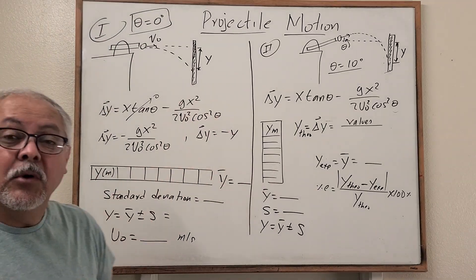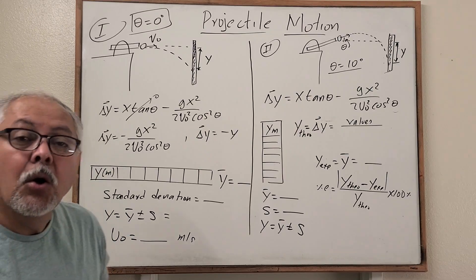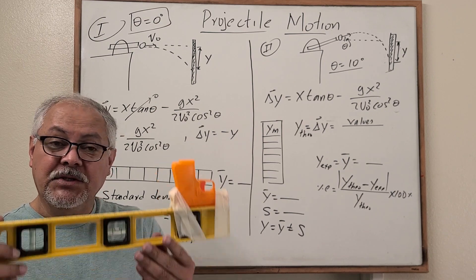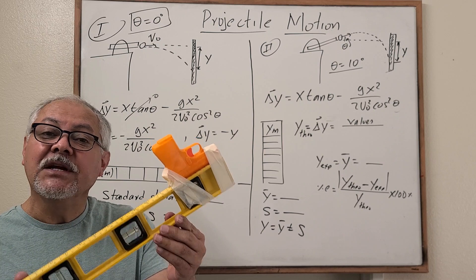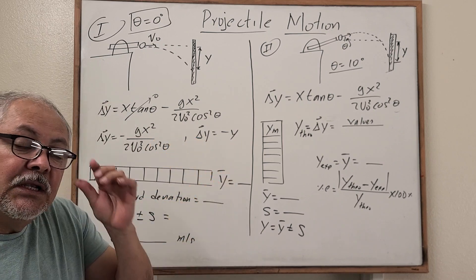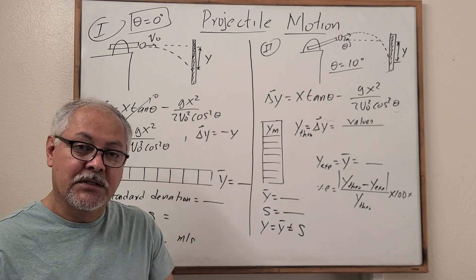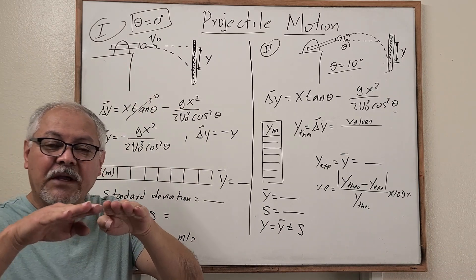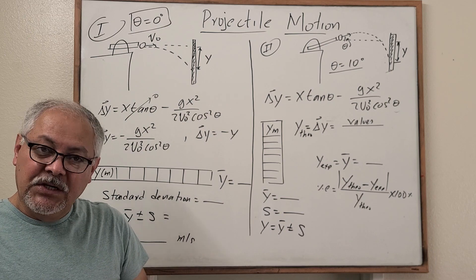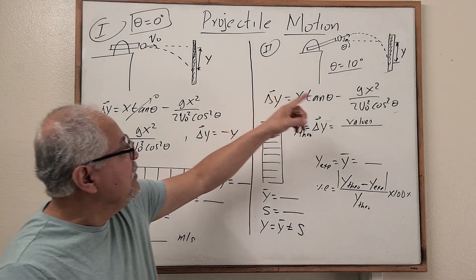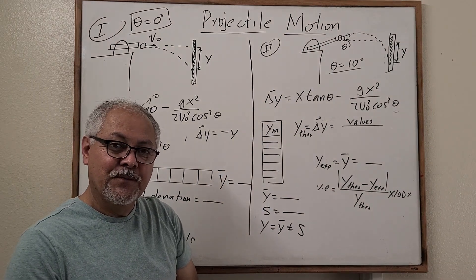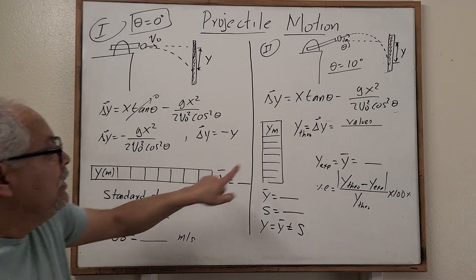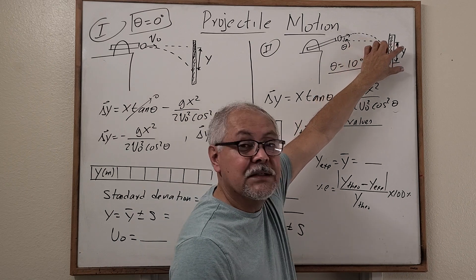Let's go to projectile motion. This is a homemade experiment. We are dealing with a spring launched at 0 degrees, then increased to 10 degrees. Let's divide this experiment into two parts. Part one is used to calculate the initial velocity, and that happens when we have the horizontal initial velocity. Part two is when we have an angle of 10 degrees.